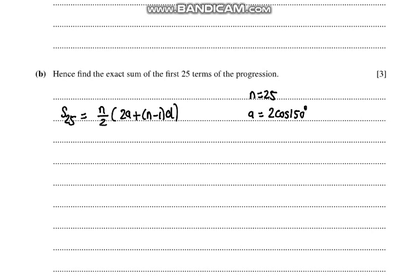We know n is 25. Our first term is 2cos(150). Our difference could be found from: our third term is -6√3sin(150) = a + 2d, which could be written as 2cos(150) + 2d. So from here d becomes -√3.